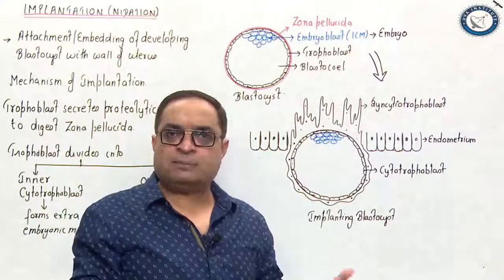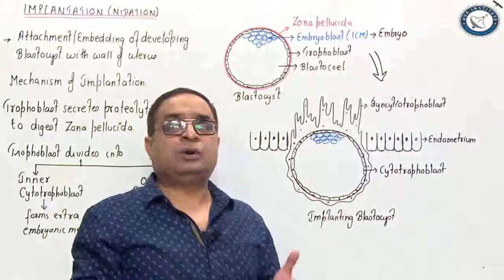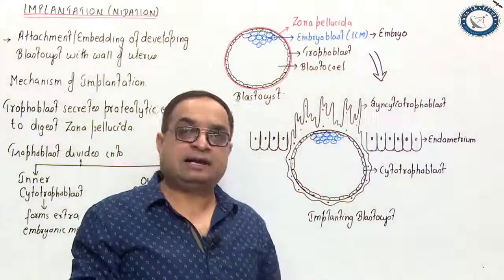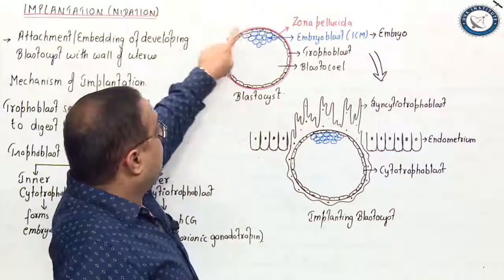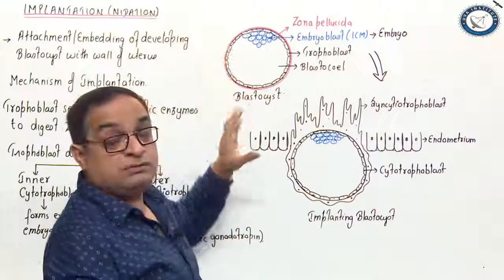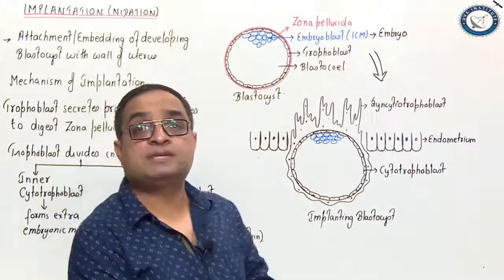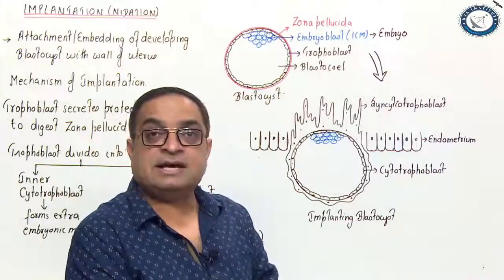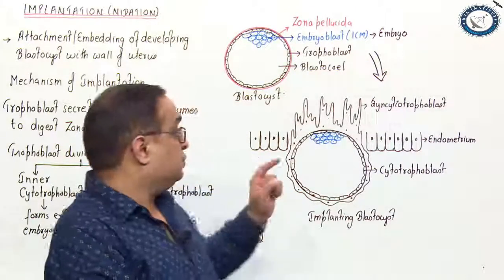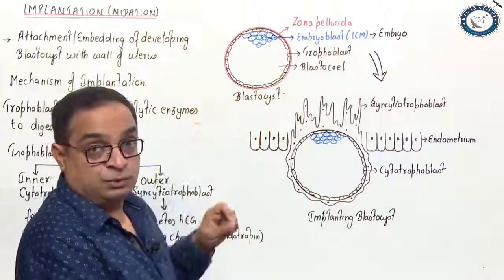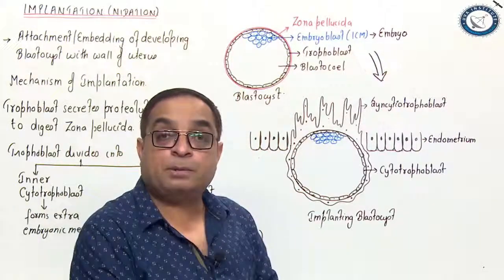We will discuss extra-embryonic membranes — amnion, chorion, yolk sac, and allantois — in forthcoming lectures. Now, before this structure can attach with the wall of the uterus, one very important process must take place: that is hatching of the blastocyst. The zona pellucida layer ensures that implantation happens at the proper site.